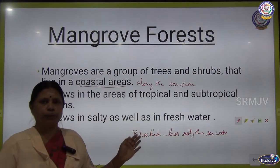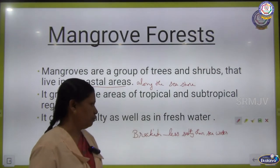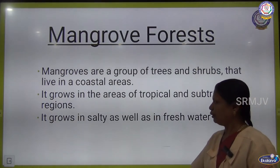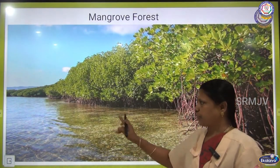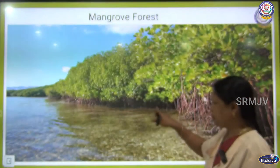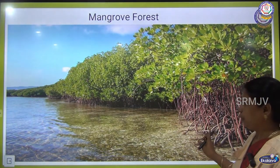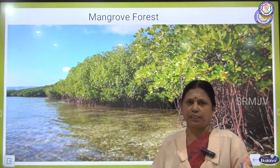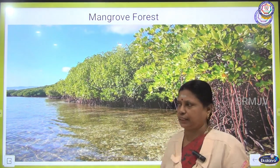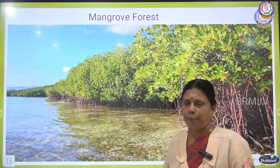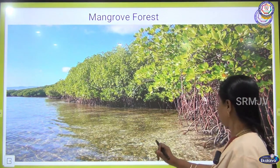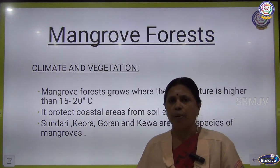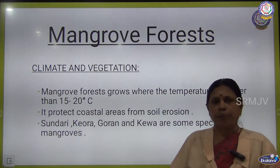Mangrove trees grow in fresh water, salt water, as well as in brackish water. You can see the picture of the mangrove forest — it is grown in coastal regions and the roots are above the ground. These areas are always swampy, meaning marshy or wetland. This type of mangrove tree grows in swampy regions.